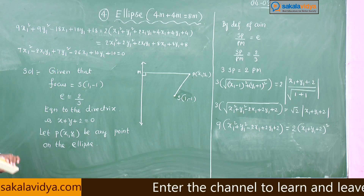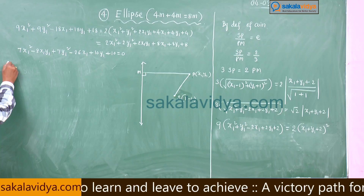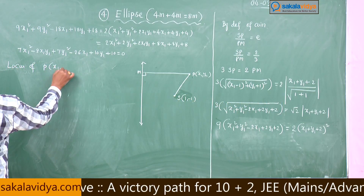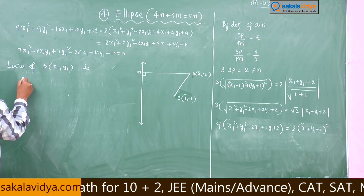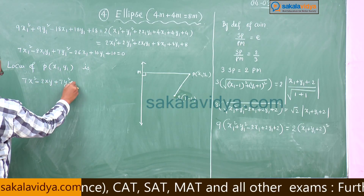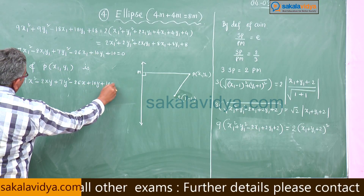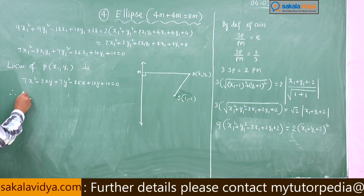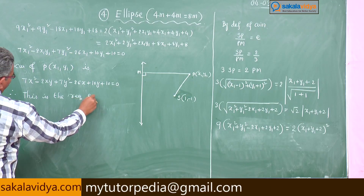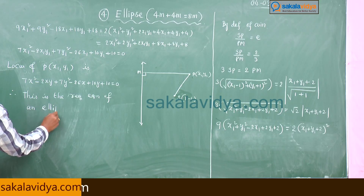Now, finding the locus: the locus of P(x₁, y₁) is 7x² - 2xy + 7y² - 26x + 10y + 10 equals 0. This is the required equation of the ellipse for the given data.